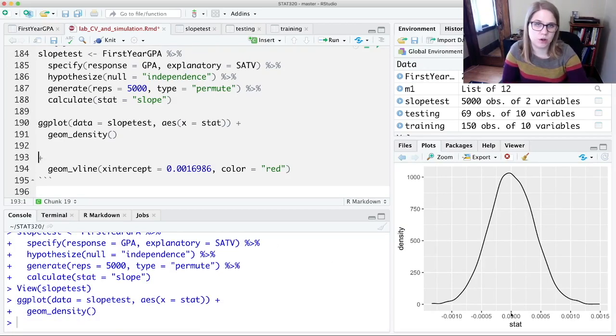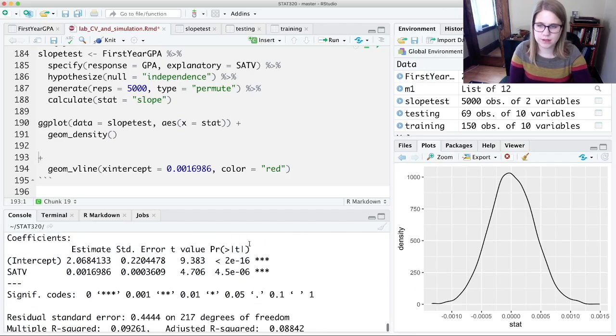Randomization distribution is always centered around the null hypothesis. And when we do hypothesis testing, we want to know how extreme our observed statistic was in the context of the data. So our observed statistic was that 0.0016986. And I could just look at this visually, right? Here's 0.0015, so 0.0016 is going to be off here.